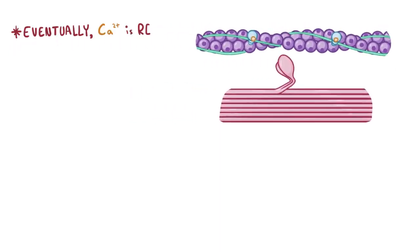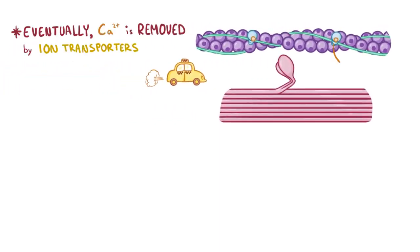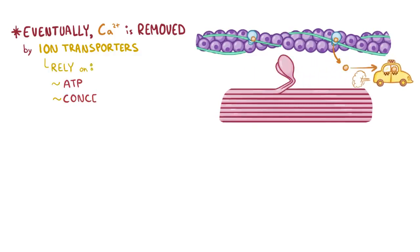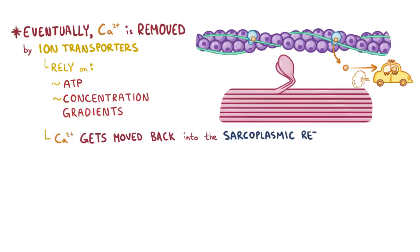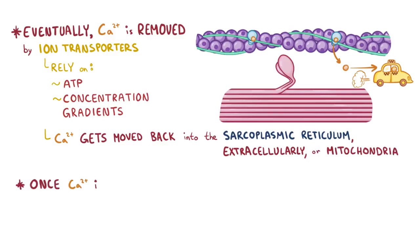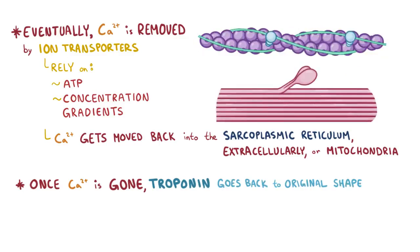Eventually, calcium ions are removed by ion transporters that rely on ATP or concentration gradients. Most of the calcium gets moved back into the sarcoplasmic reticulum or the extracellular environment, and some also moves into the mitochondria. Once that calcium is gone, the troponin goes back to its original shape, which blocks the binding sites on the actin and prevents more crossbridges from forming.